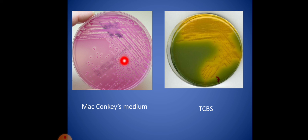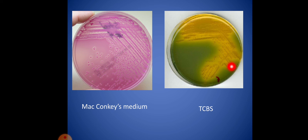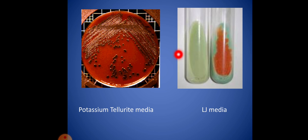In MacConkey agar we can see the lactose fermenting colonies, and TCBS contains Vibrio cholerae colonies. This one is potassium tellurite medium and this one is LJ medium.